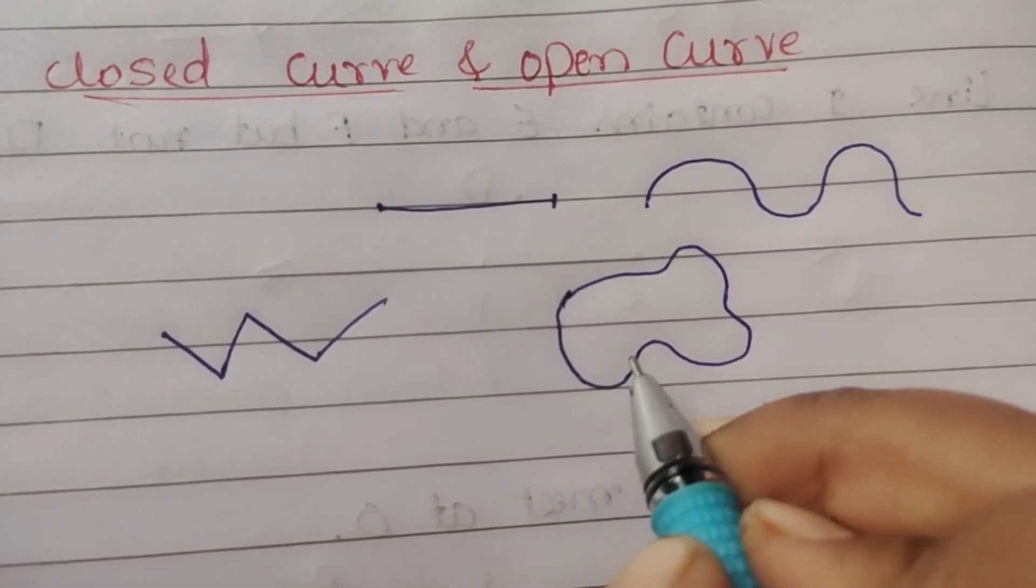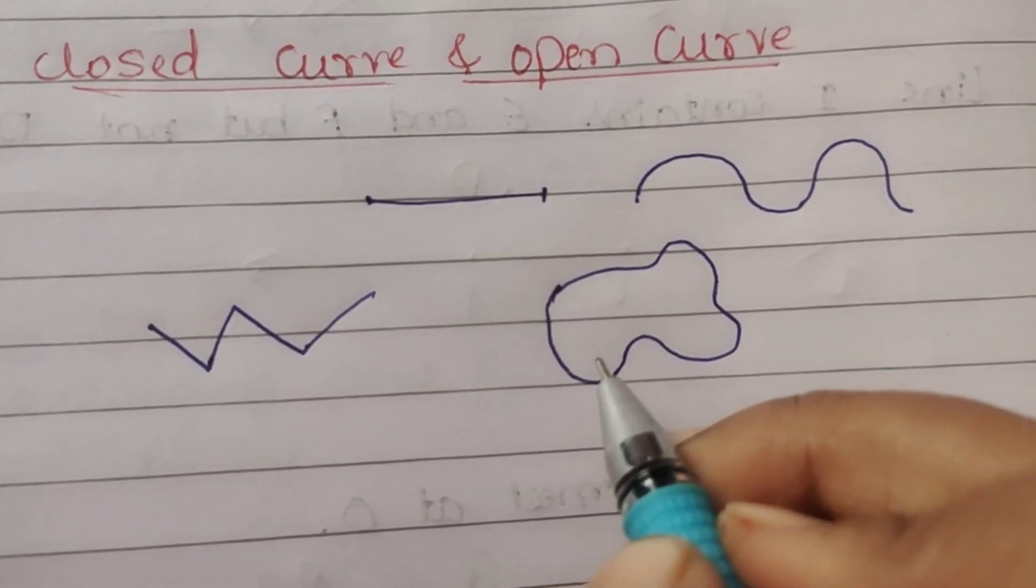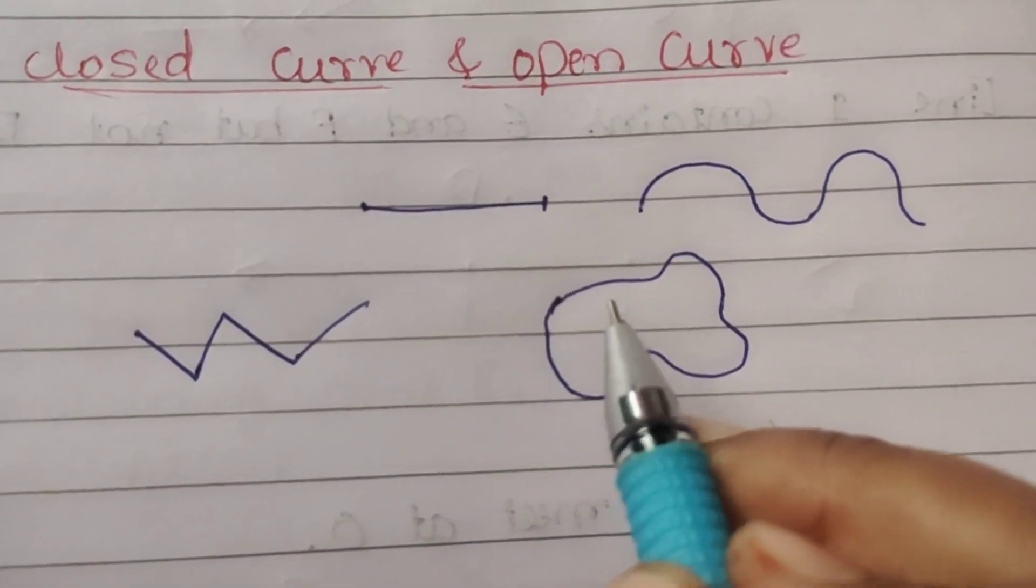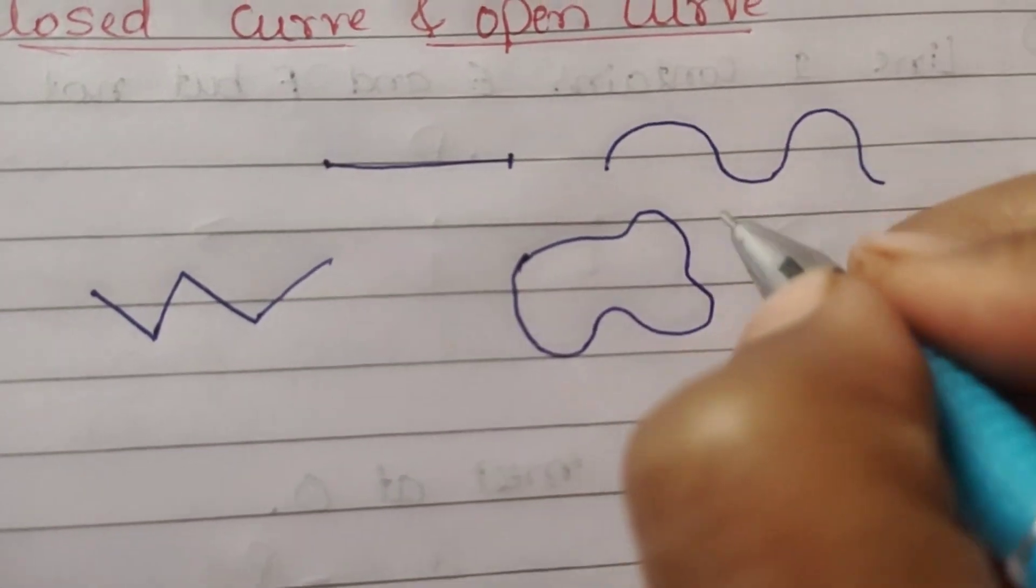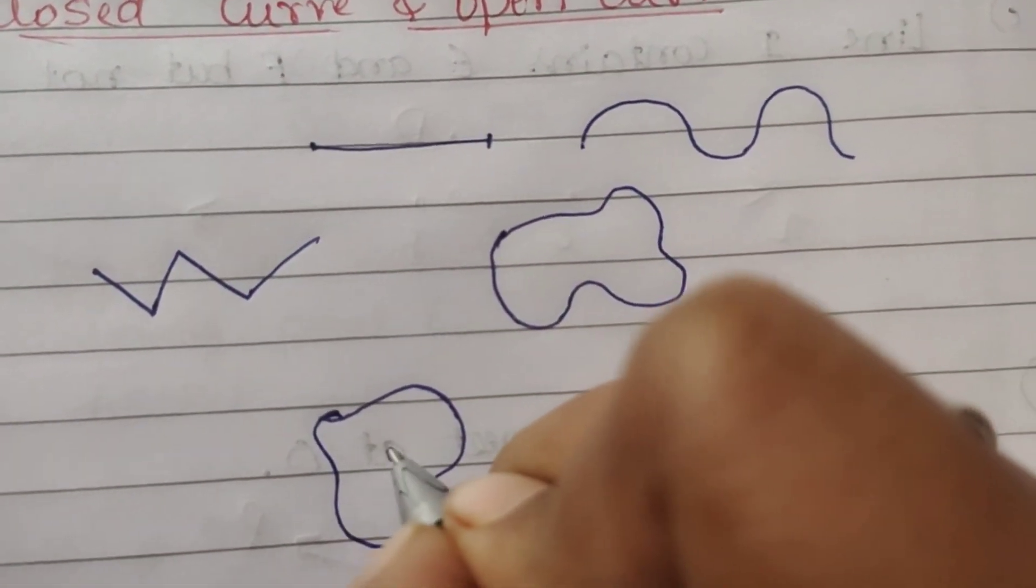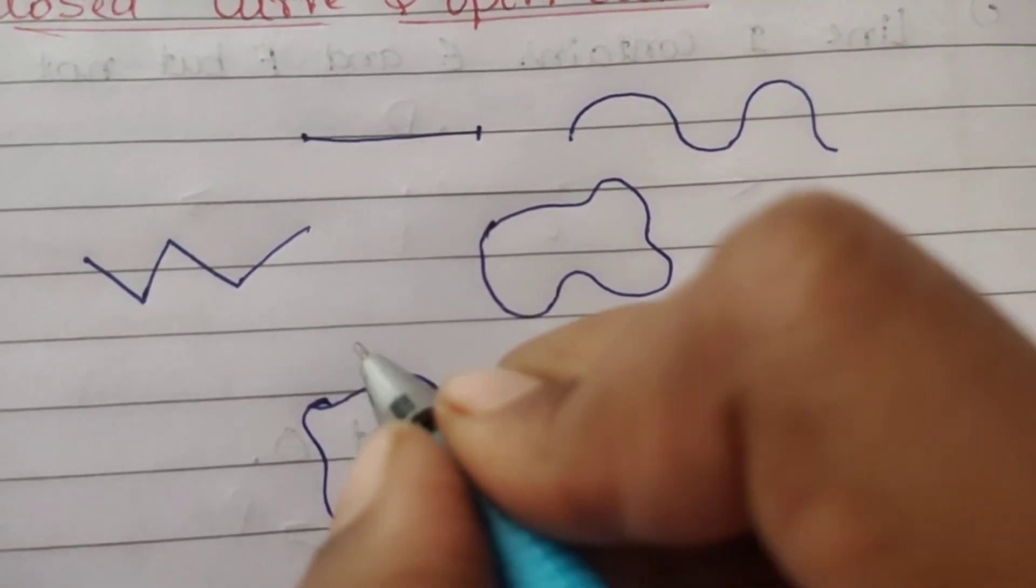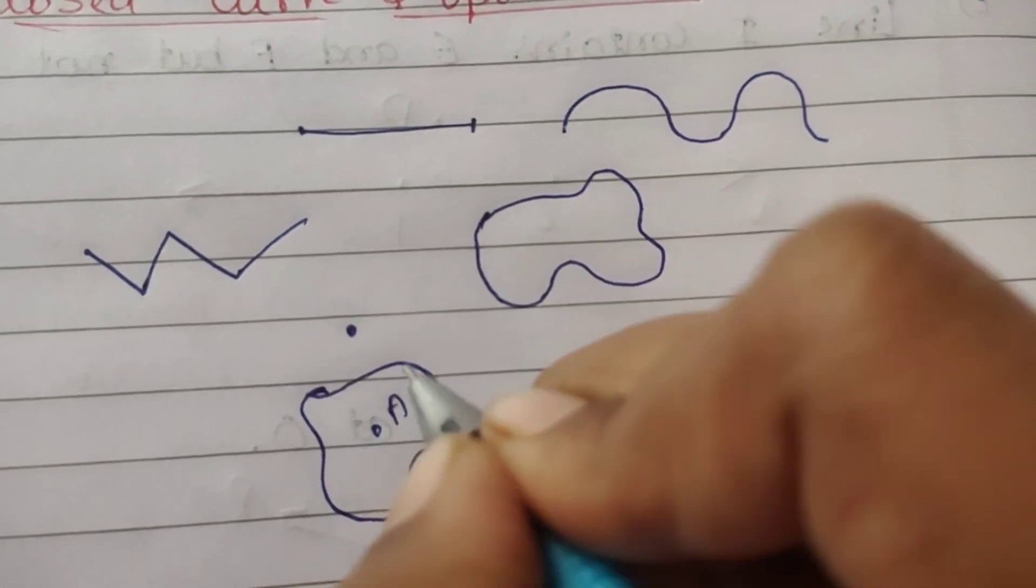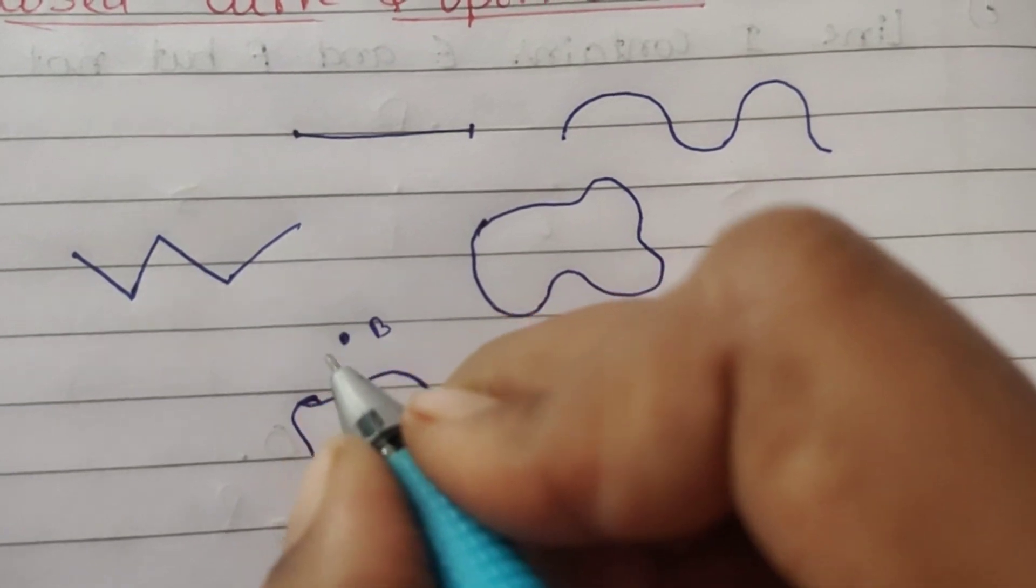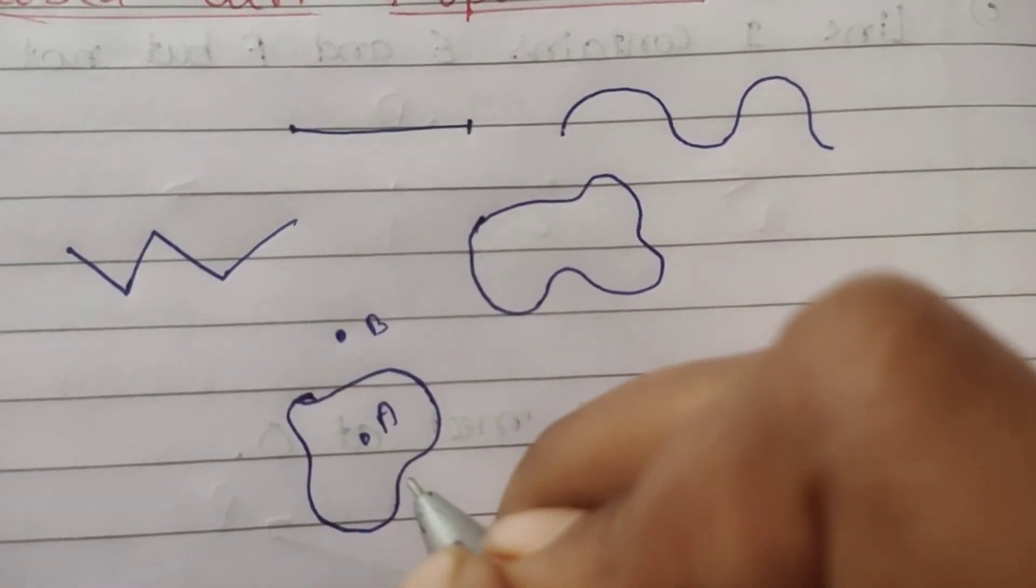In a closed curve, the starting point and ending point meet. For curve, even the point is inside the curve or outside the curve. For example, point A is inside the curve and point B is outside the curve. These are the positions of points.